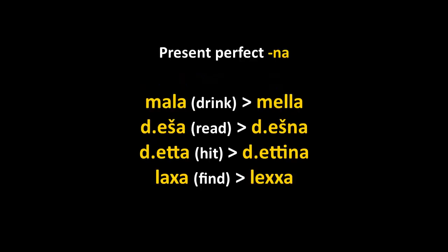The present perfect is formed with the suffix -na. Malan becomes mila — the na merged with the L and there was also a vowel shift in the middle. Deesha becomes dietina. Lacha becomes lecha — there's an absorption of the N by the stem consonant, so instead of lechna we have lecha. That happens a lot.